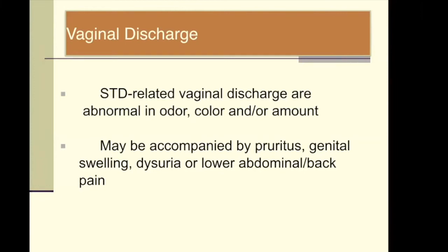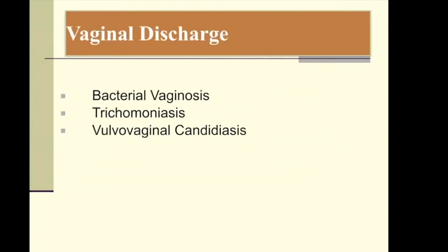The second syndrome is vaginal discharge. STD-related vaginal discharge is abnormal in color and amount, usually accompanied by pruritus, swelling, dyspareunia, or lower abdominal or back pain. There are only three etiologic agents: bacterial vaginosis caused by Gardnerella vaginalis, trichomoniasis caused by Trichomonas vaginalis (a protozoan), and vulvovaginal candidiasis caused by Candida fungi.